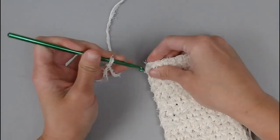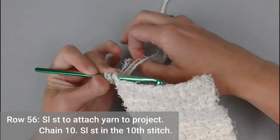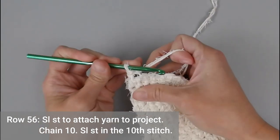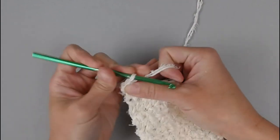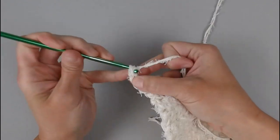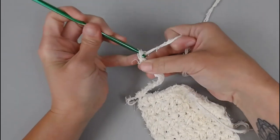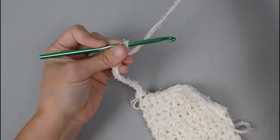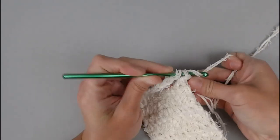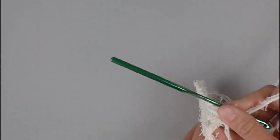We're going to slip stitch into the very first stitch here, the corner stitch. Then chain 10: 1, 2, 3, 4, 5, 6, 7, 8, 9, 10. Slip stitch into the 10th stitch. Turning our work.